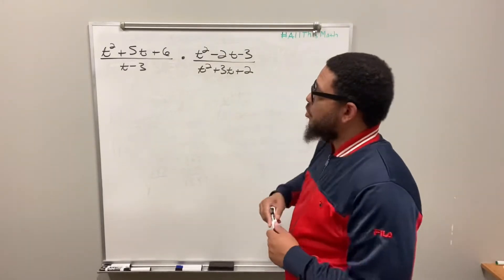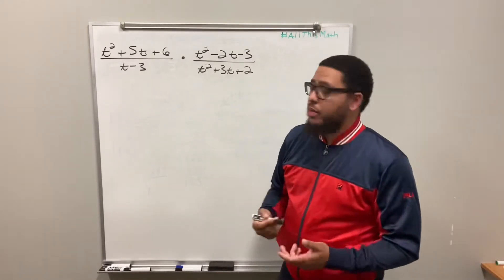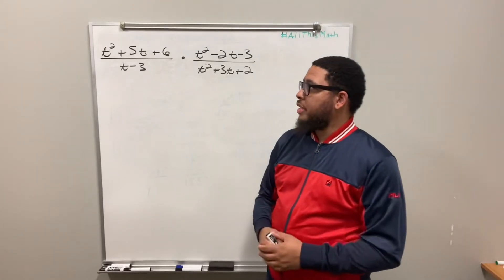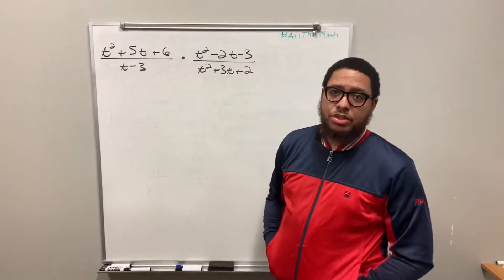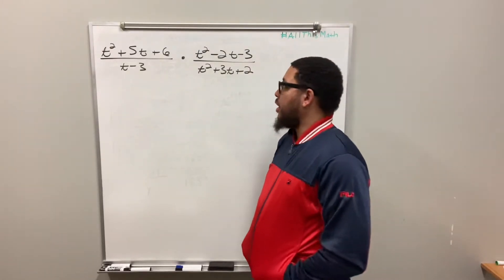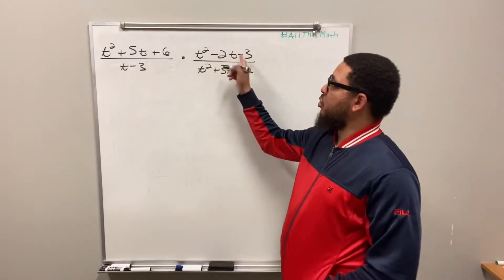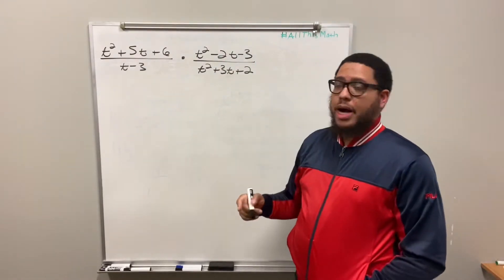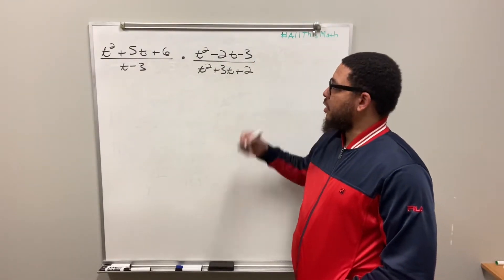So first, take an inventory of what you have. We have t squared plus 5t plus 6 divided by t minus 3, and then we have t squared minus 2t minus 3 divided by t squared plus 3t plus 2.